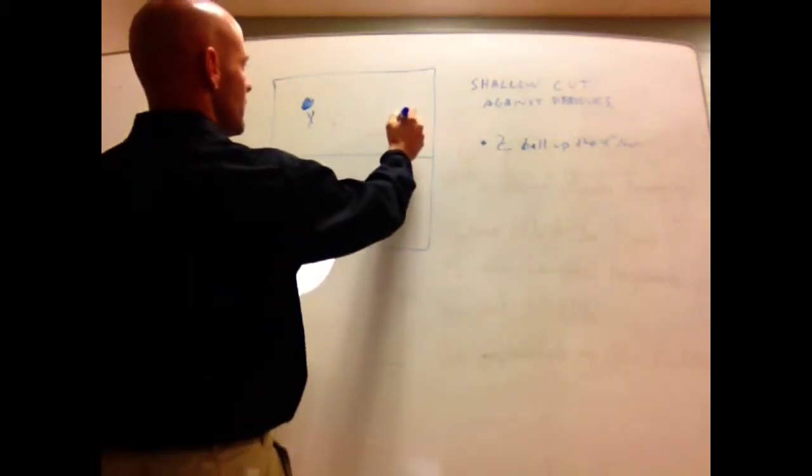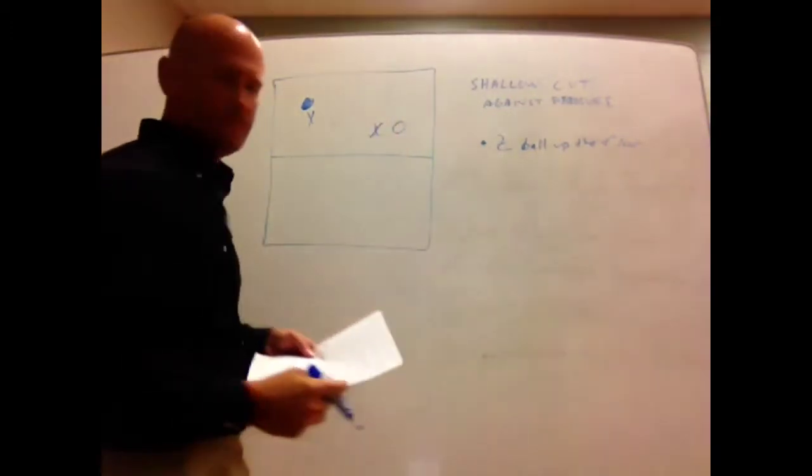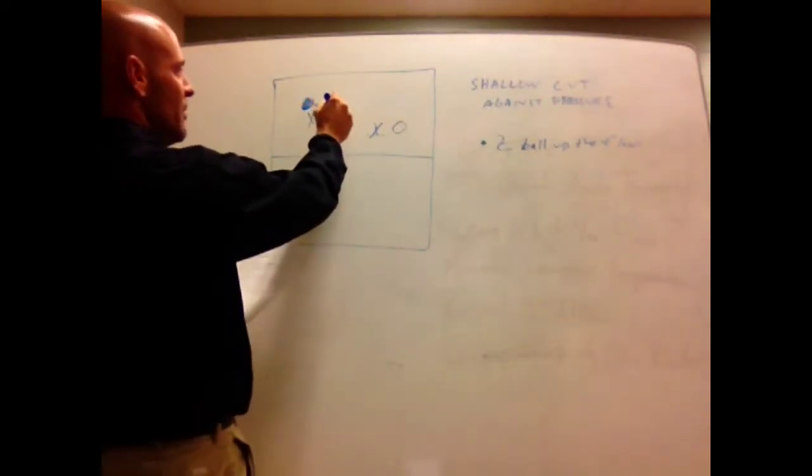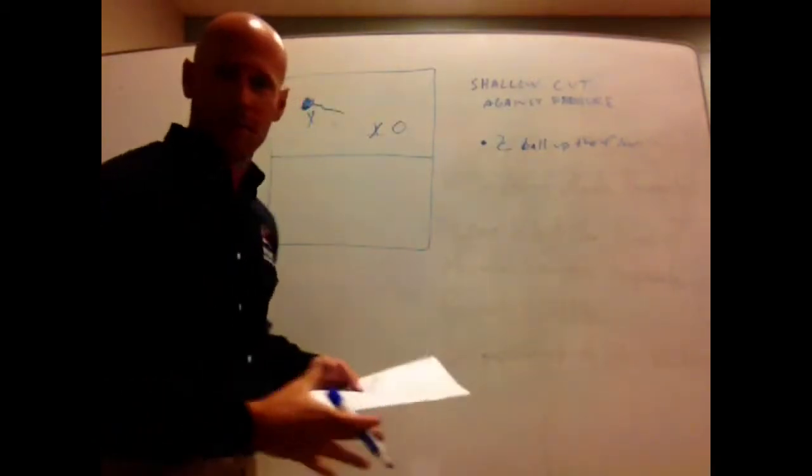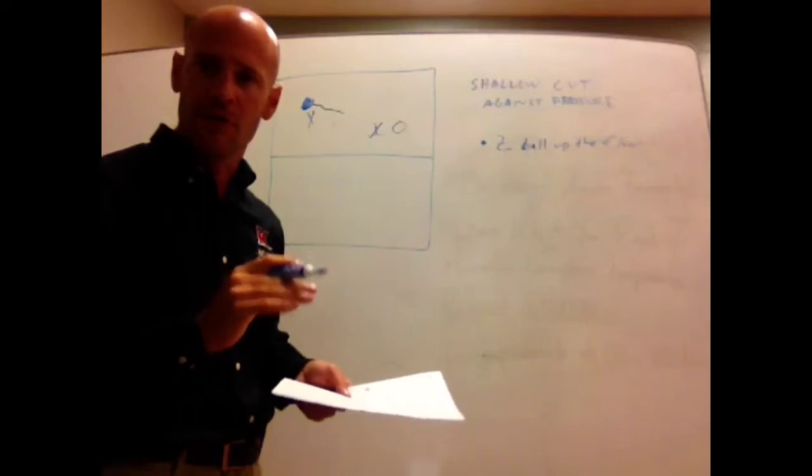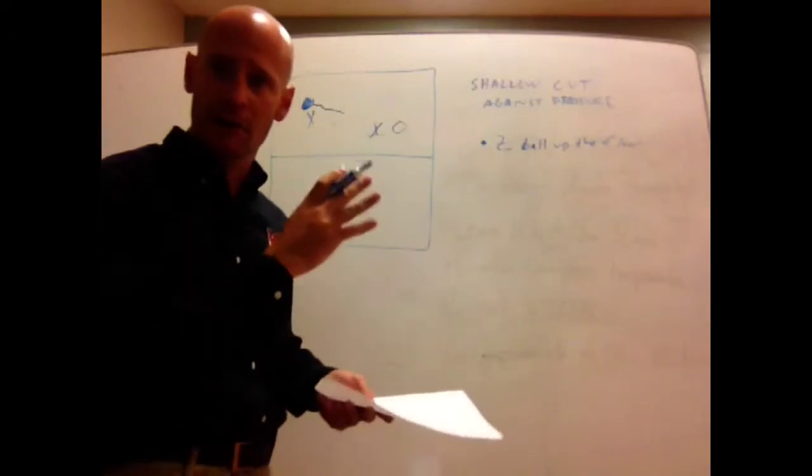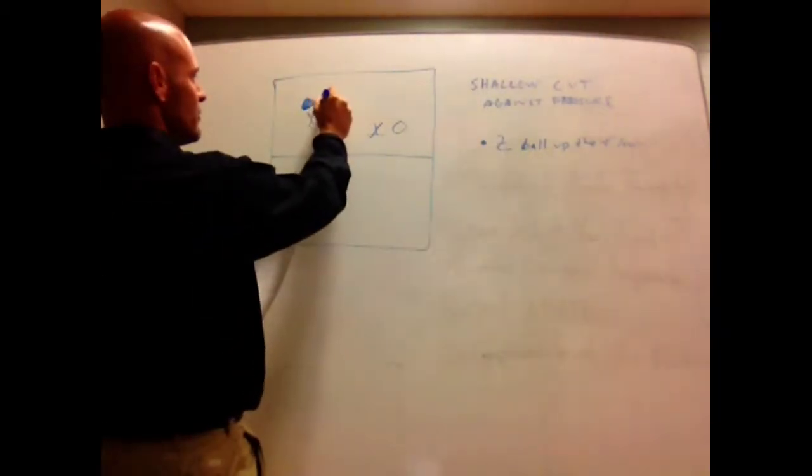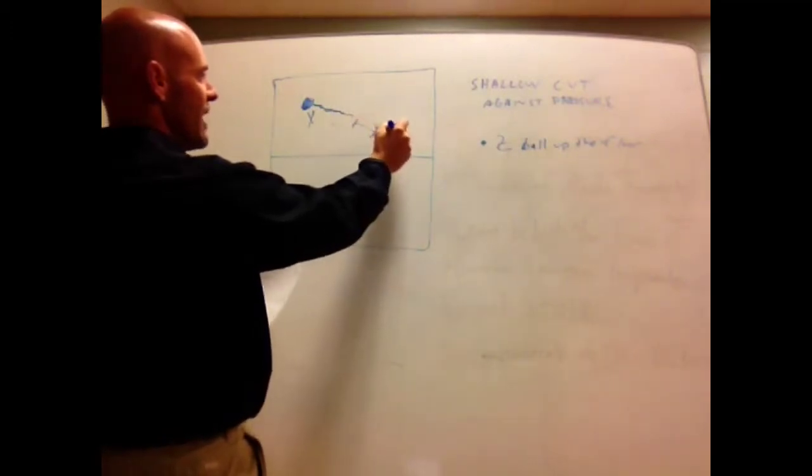So in this scenario we'll have a setup like this. The defense is pushing the ball in this direction. And the basic rule with the shallow cut is if you're attacking pressure and the dribbler is coming at you, you employ the shallow cut to get away from that. So in this situation the dribbler is coming right at the offensive player, defense comes to trap.